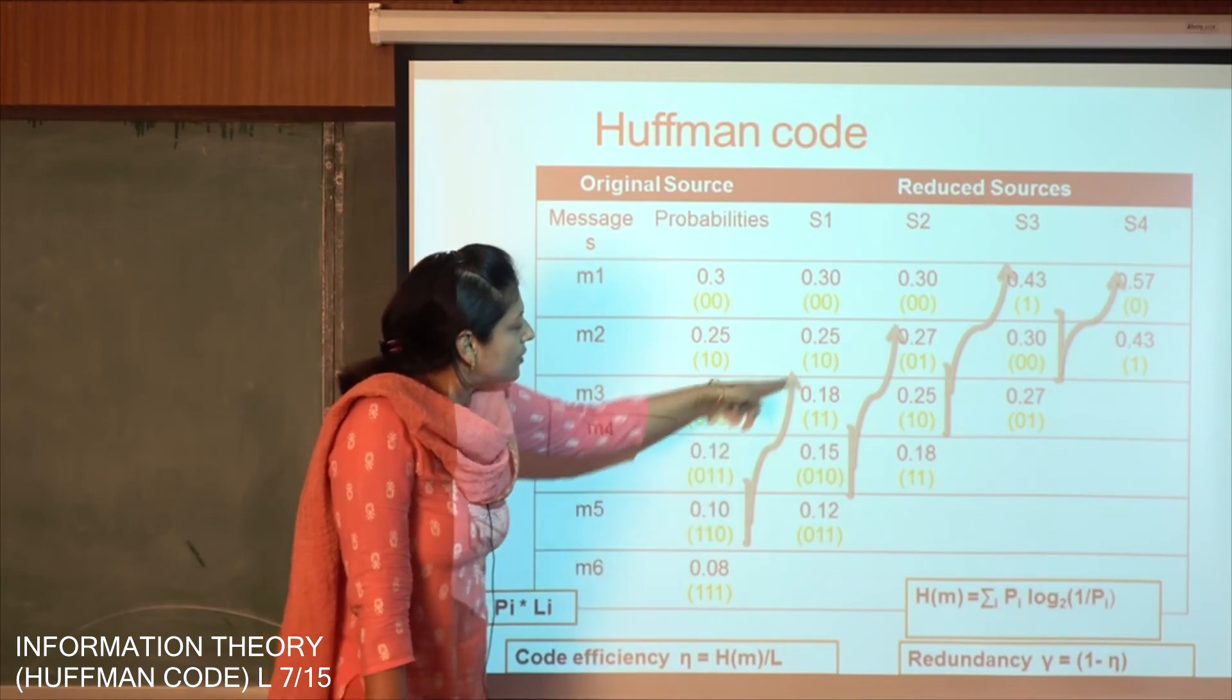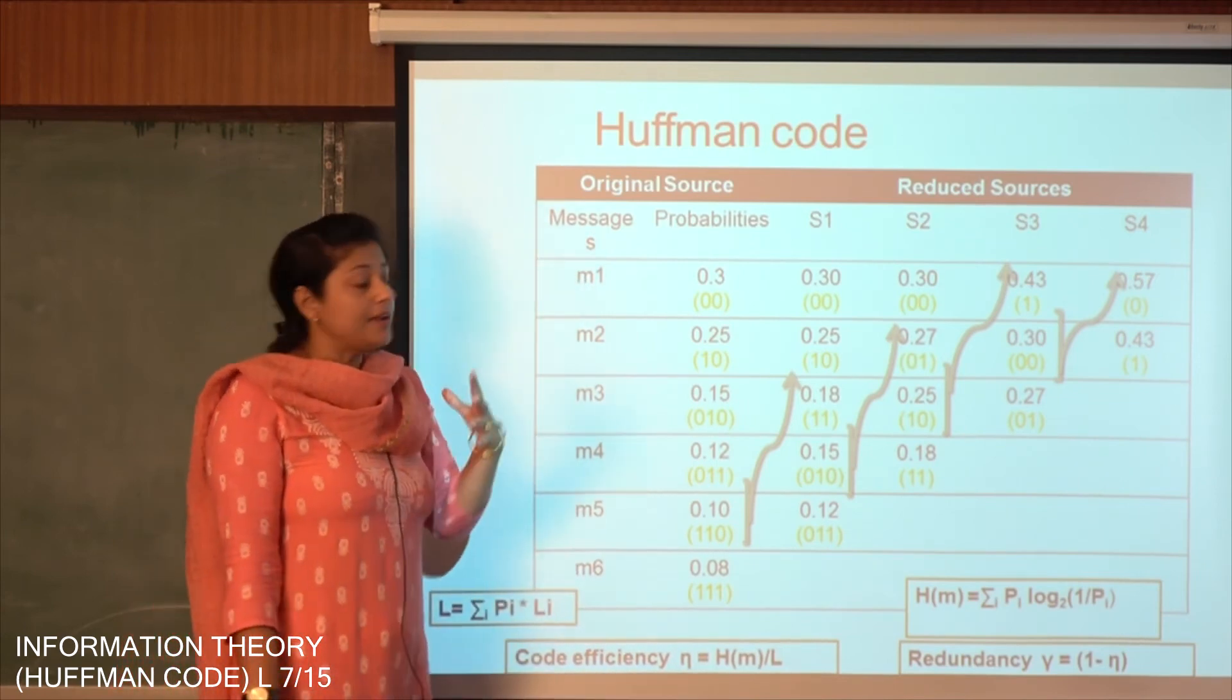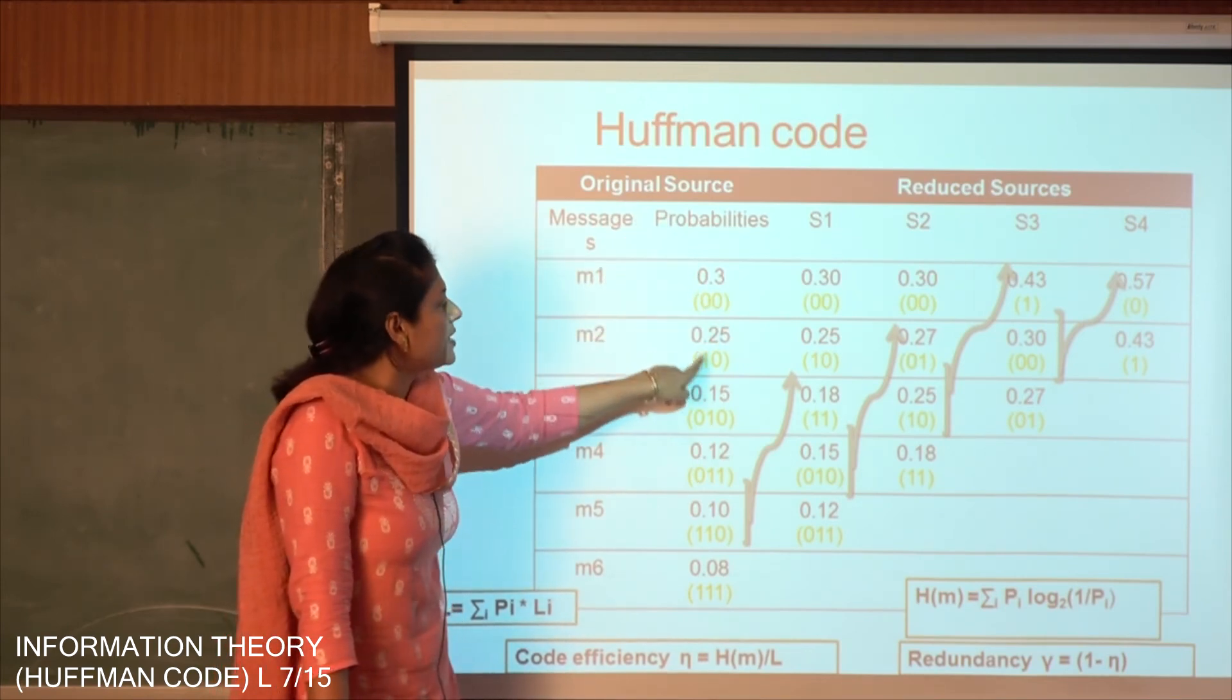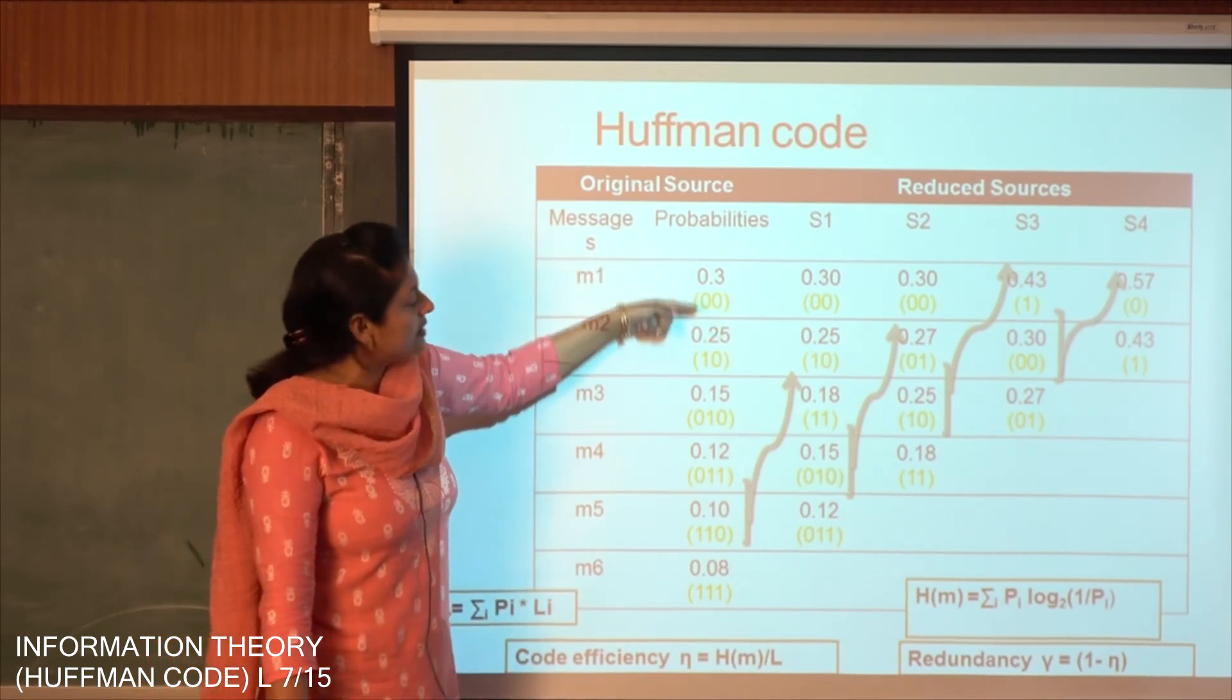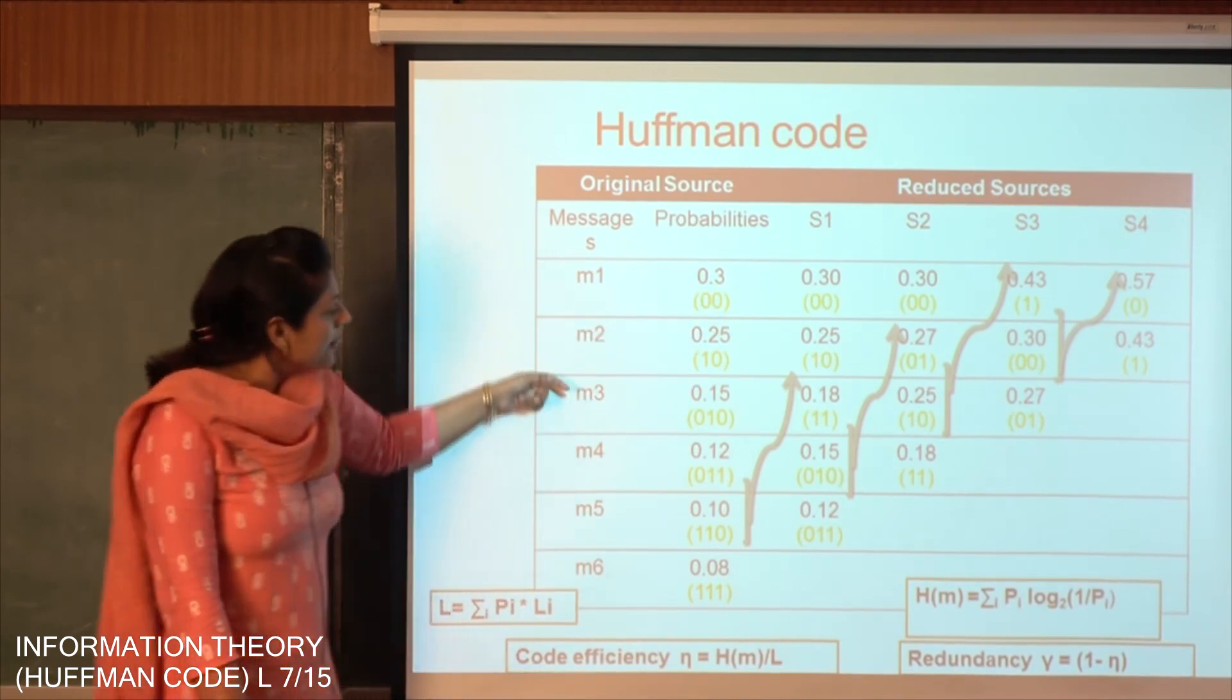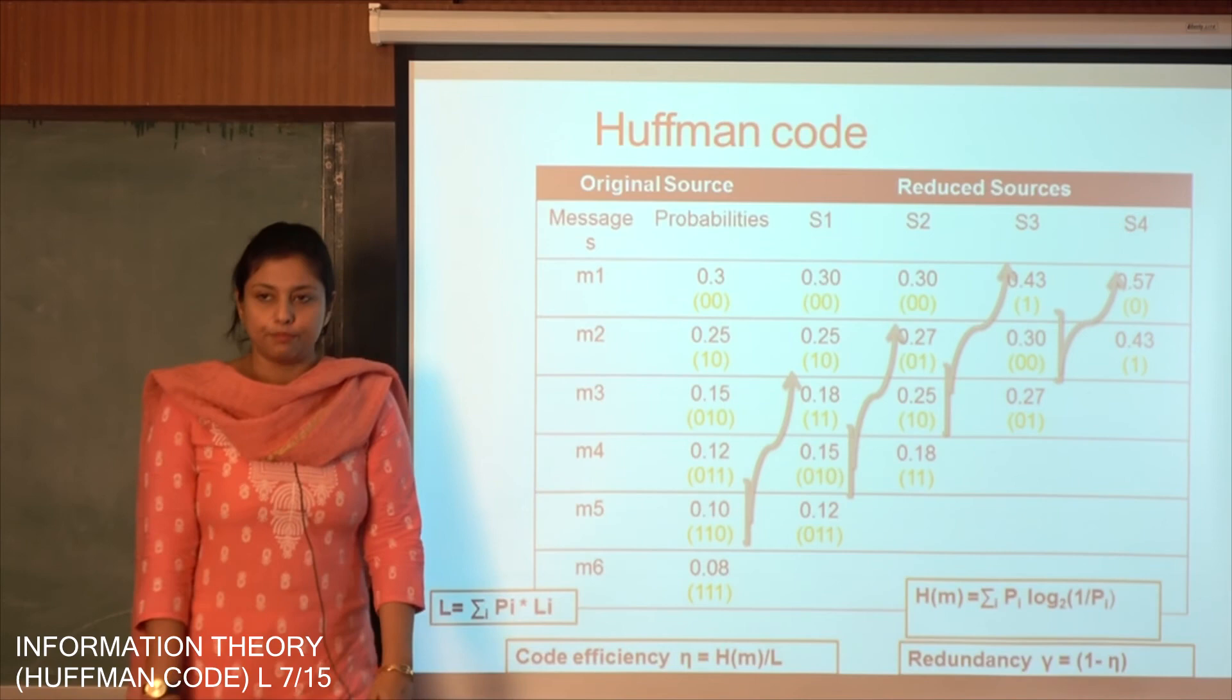So we can see that rightfully the digits which have higher probability of occurrences have been encoded with lower number of bits. Like M1 and M2 they have high probability of occurrences as compared to the other bits, so we have encoded them with two digits. Whereas M3, M4, M5, M6 they have low probability of occurrences, so we have encoded them with three number of bits.